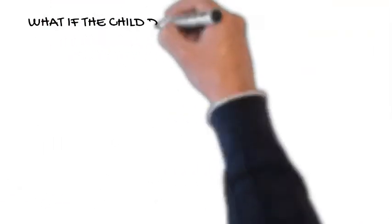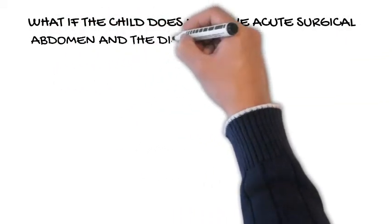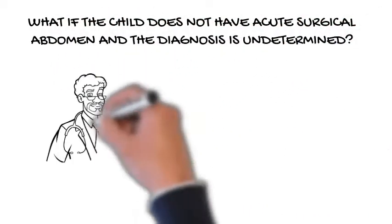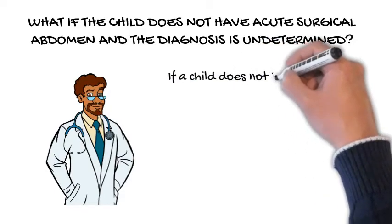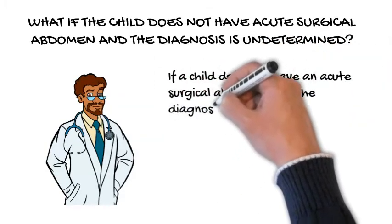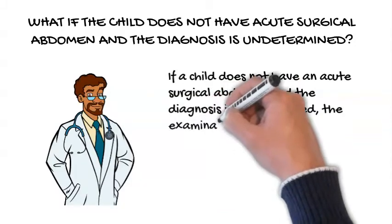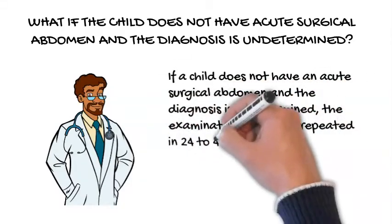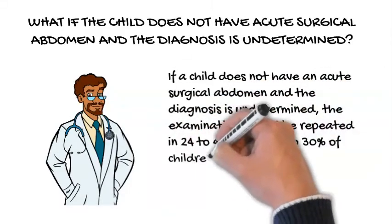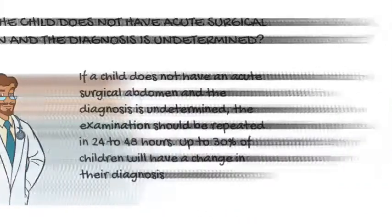What if the child does not have an acute surgical abdomen and the diagnosis is undetermined? If a child does not have an acute surgical abdomen and the diagnosis is undetermined, the examination should be repeated in 24 to 48 hours. Up to 30% of children will have a change in their diagnosis.